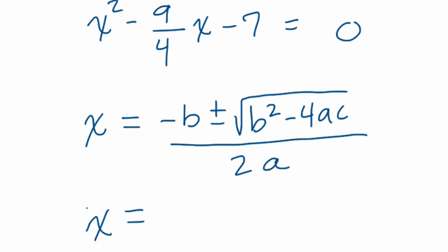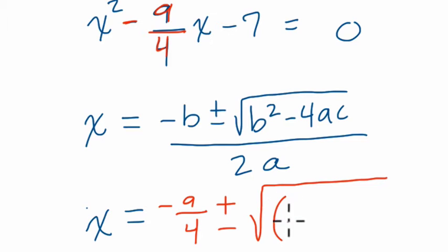Well, b is the coefficient of x. That's this number right here. It's the coefficient of the x term. So b is negative nine-fourths. And then we do plus or minus the square root of b squared. Again, that's negative nine-fourths squared.